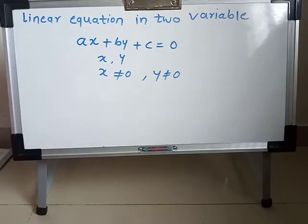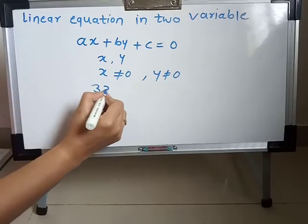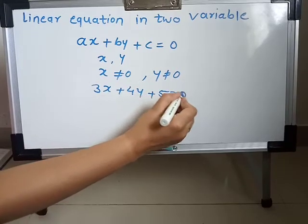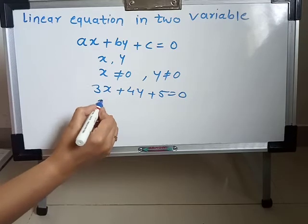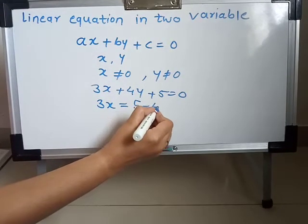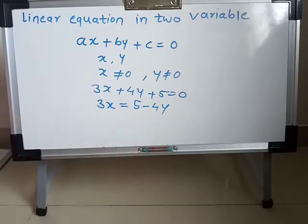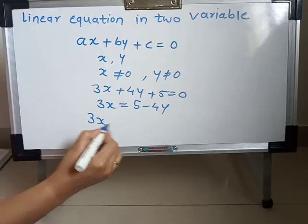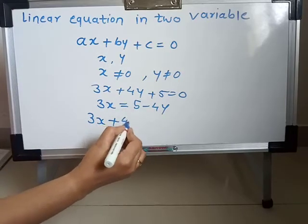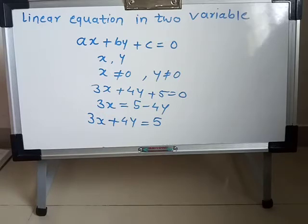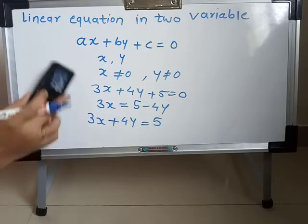When we are given an equation like 3X plus 4Y plus 5 is equal to 0, this is called standard form. And when we are given an equation like 3X plus 4Y minus 4Y, we rearrange it into standard form: 3X plus 4Y is equal to 5, which is called the linear equation in standard form.